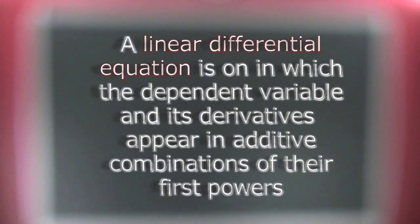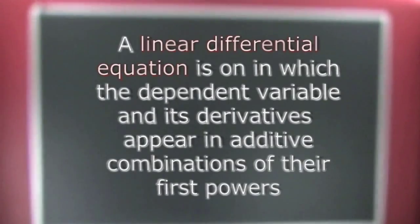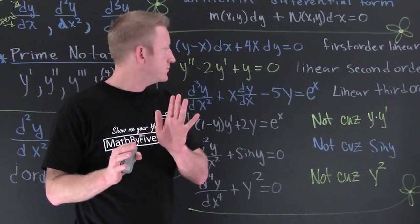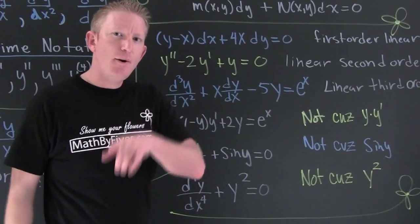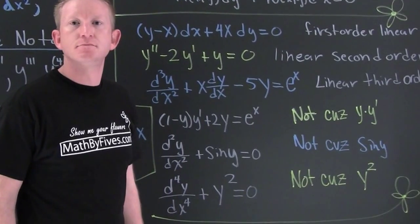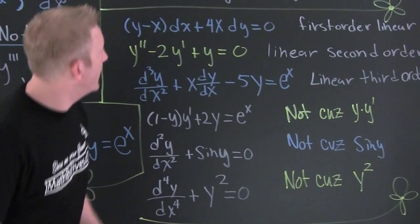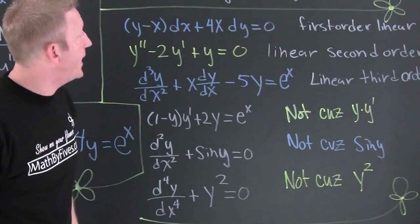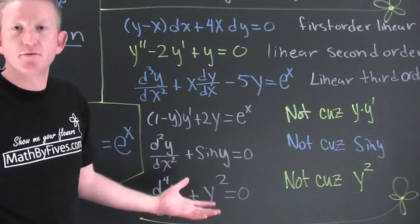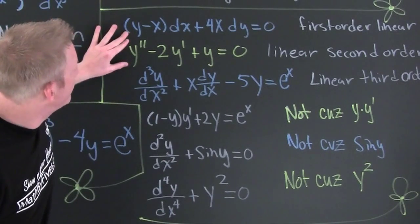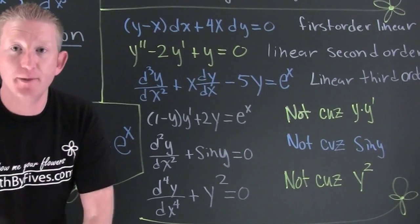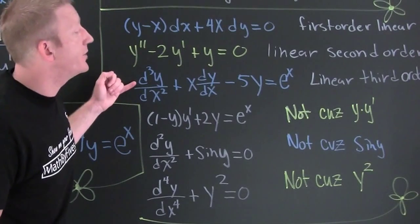A linear differential equation is one in which the dependent variable and its derivatives appear in additive combinations of their first powers. Here we see something in differential form and it's linear, because you can write the linear ones in differential form. This one is second-order linear because we only have an additive combination of these derivatives. This one is third order because our largest derivative is of third degree.